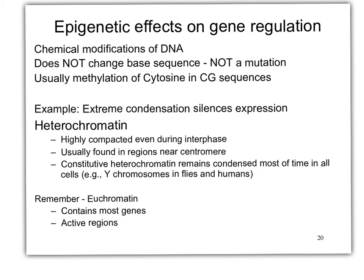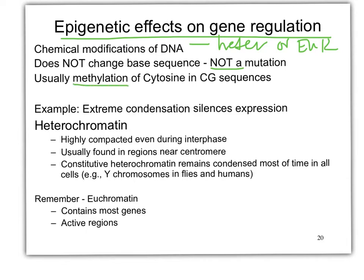It's epigenetic effects on gene regulation — chemical modifications of DNA that help make heterochromatin or euchromatin. Not DNA sequence — it is not a mutation. The only thing it has to do with sequences is that there is methylation, or a methyl group, that can be attached to the cytosine in CG sequences.